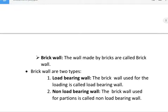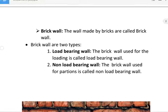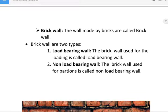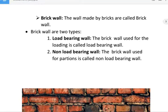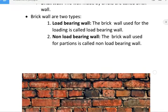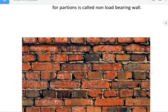First, brick wall. The wall made by bricks is called a brick wall. Brick walls are of two types: first, load bearing wall, and second, non-load bearing wall. A load bearing wall is a wall used to carry loading. A non-load bearing wall is a brick wall used for partitions. Brick wall is shown in figure.